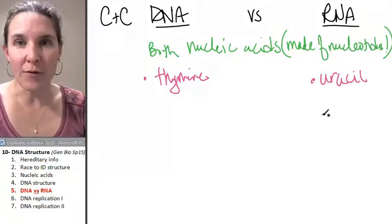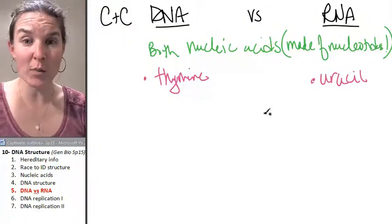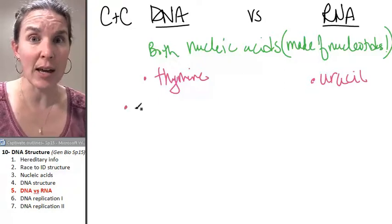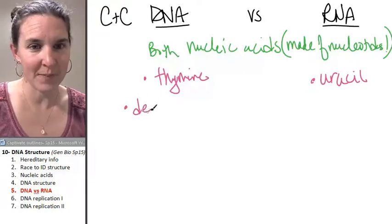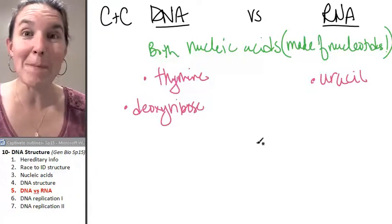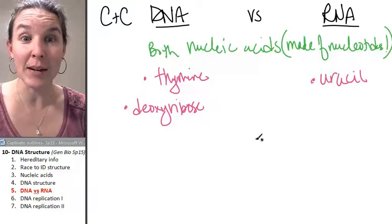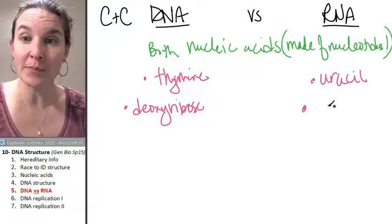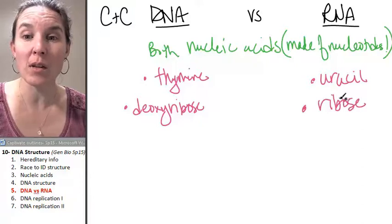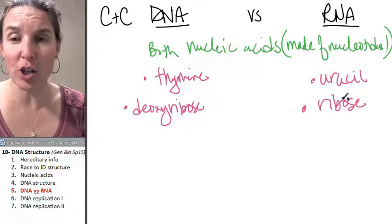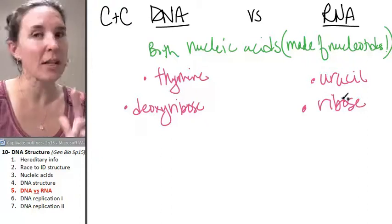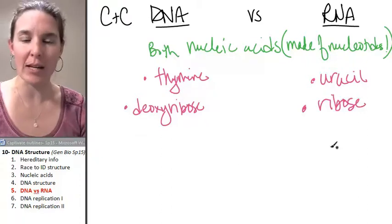There's another difference, and you already know this one. What's the sugar in DNA? Deoxyribose is the pentose sugar in DNA. What is the sugar in RNA? Ribose. Ribose is the sugar in RNA — ribonucleic acid as opposed to deoxyribonucleic acid.